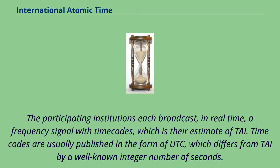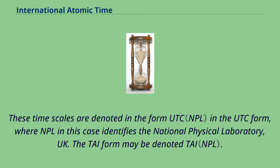The participating institutions each broadcast, in real time, a frequency signal with timecodes, which is their estimate of TAI. Timecodes are usually published in the form of UTC, which differs from TAI by a well-known integer number of seconds. These timescales are denoted in the form UTC(k), where NPL in this case identifies the National Physical Laboratory, UK. The TAI form may be denoted TAI(k).